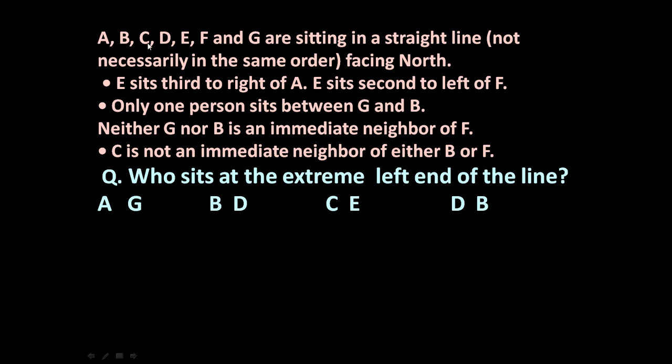There are 7 persons: A, B, C, D, E, F and G. They are sitting in a straight line facing north. Now let us go statement by statement.